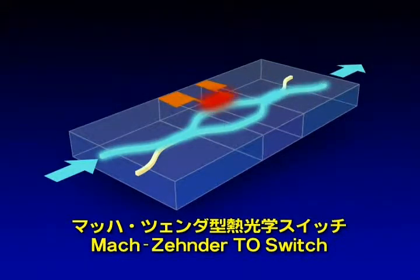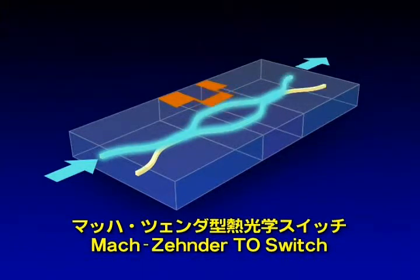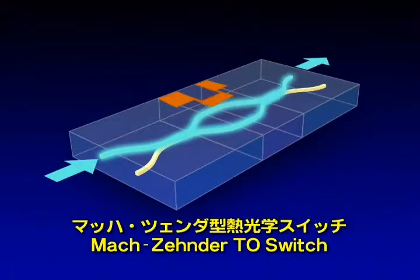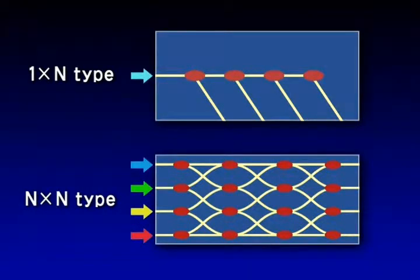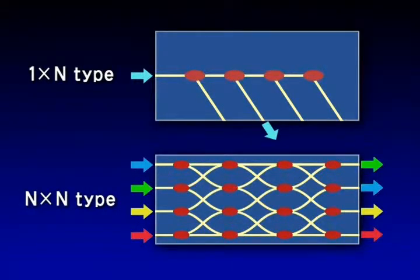Thus, it has no moving parts and offers superior reliability. By combining optical waveguides and TO switches, we can construct optical switches of various types.